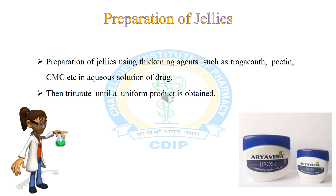Pharmaceutical jellies are usually prepared by adding a thickening agent such as tragacanth, carboxymethyl cellulose, pectin, etc. to an aqueous solution of drug; the mass is triturated in a mortar and pestle until a uniform product is obtained — most often a glass mortar and pestle are used. Since jellies contain a large amount of water, they are prone to bacterial or fungal growth, so jellies must contain a suitable preservative.